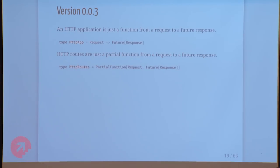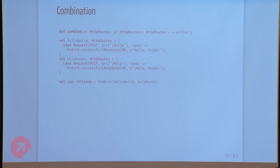Scala has partial functions, which are good. With a partial function, you're expressing via the type system that it's a partial mapping of requests to responses — I don't handle all requests, but I handle these requests. So we define HTTP routes as a partial function of request to response. At the end, the server still needs a full mapping, so HTTP application is unchanged, but we introduce the concept of HTTP routes. Our combine gets a lot nicer — we don't have to catch an exception, we just use or-else, built right into partial functions.